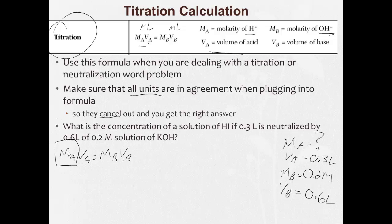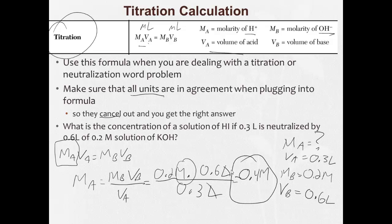So we're solving for MA. So MA equals MBVB. If I divide both sides by VA, I get over VA. Now I plug and chug. 0.2 molar times 0.6 liters divided by VA, 0.3 liters. Liters cancel, and I have 0.2 times 0.6 divided by 0.3, which is going to equal, plug that into our handy-dandy calculator, 0.2 times 0.6 divided by 0.3, and it equals 0.4. 0.4, and my units are molar. So the molarity of this acid is 0.4 molar.